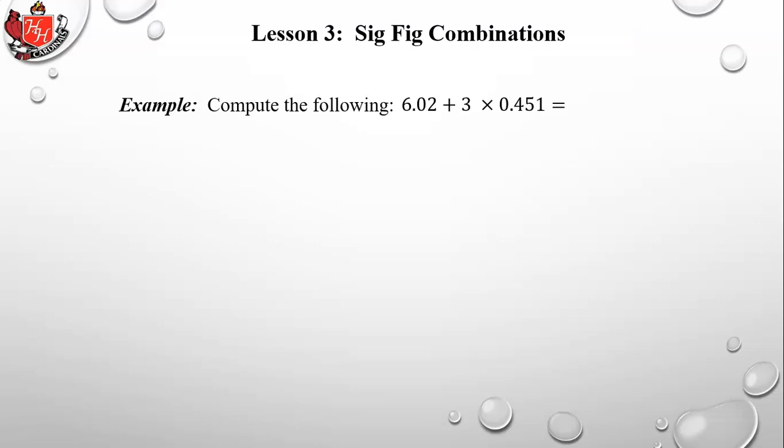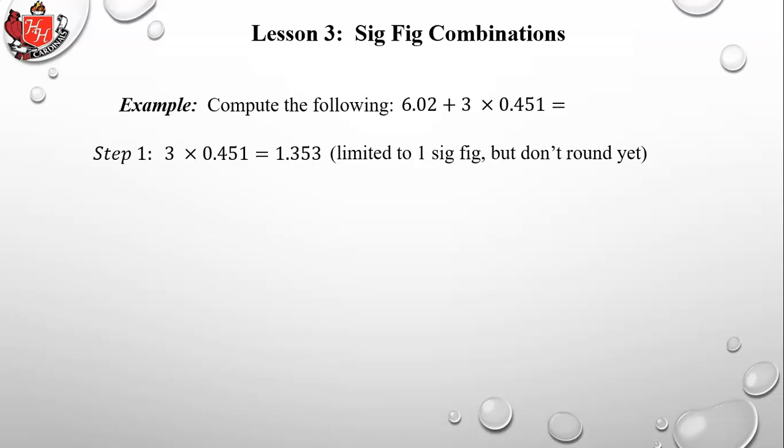Another example: here we have an addition and a multiplication. PEMDAS says do the multiplication first, so 3 × 0.451 = 1.353. That's limited to one significant figure — but don't round yet. Do the rest of the problem first, then round at the end.